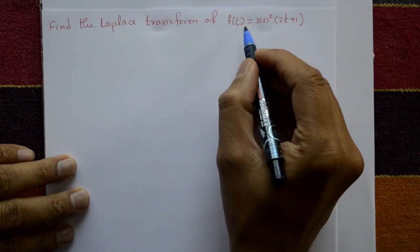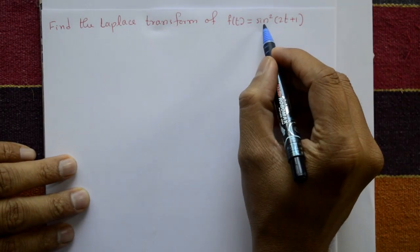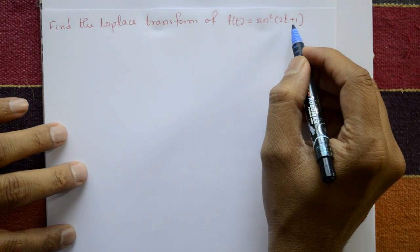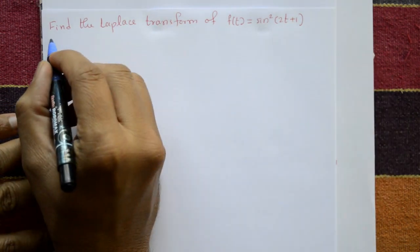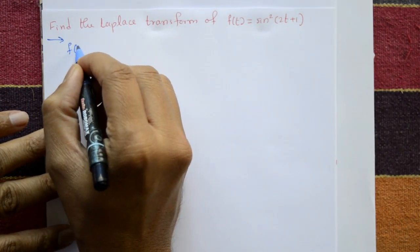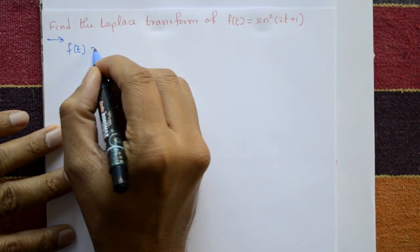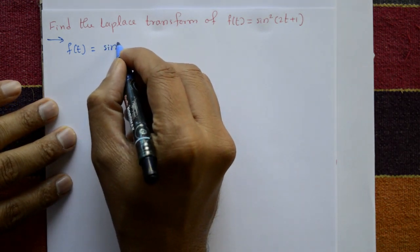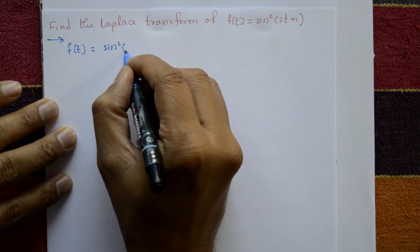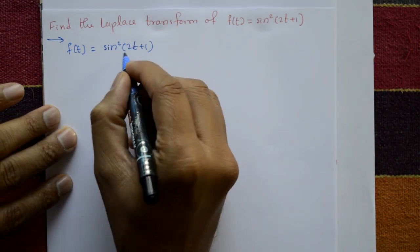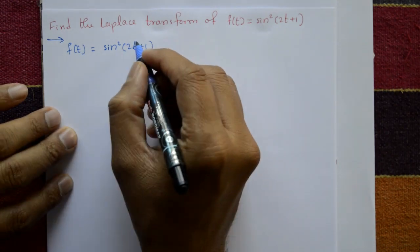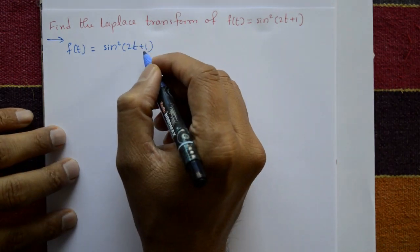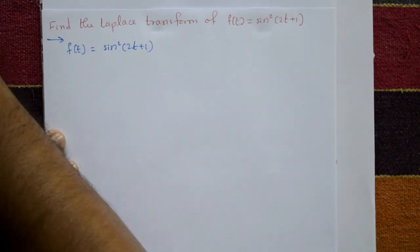Find the Laplace transform of f(t) = sin²(2t) + 1. Given f(t) = sin²(2t) + 1, this is not in standard form. We need to convert it into standard form before applying the Laplace transform.